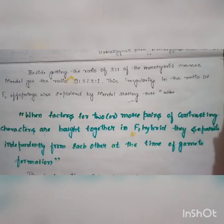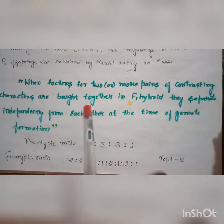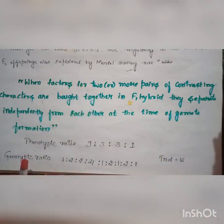Among these 16 plants, 9 are yellow round, 3 are yellow wrinkled, 3 are green round, and 1 is green wrinkled. On observing these peculiar results, Mendel stated that when factors for two or more pairs of contrasting characters are brought together in F1 hybrid, they get separated independently from each other at the time of gamete formation. This law is called the Law of Independent Assortment.